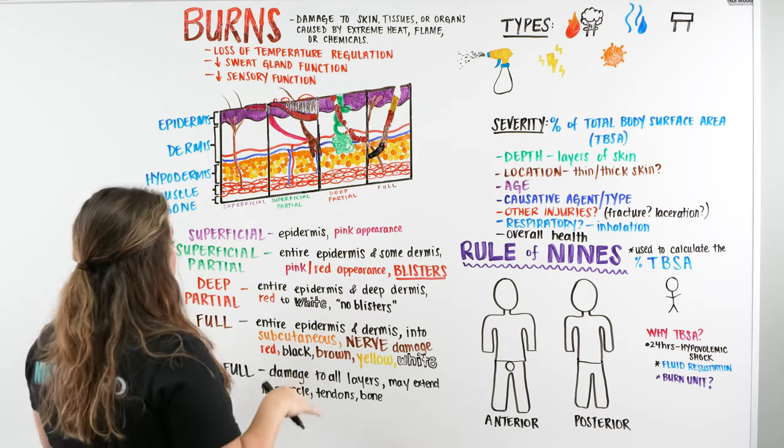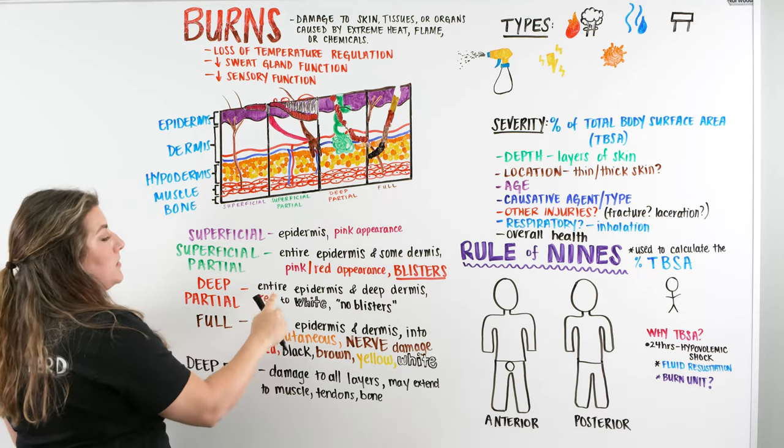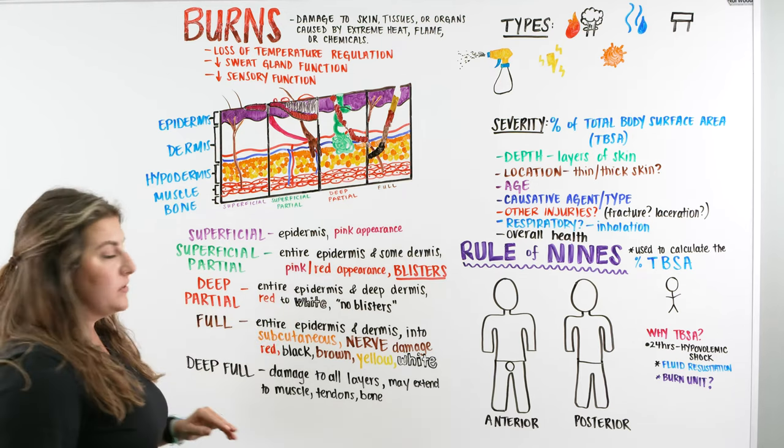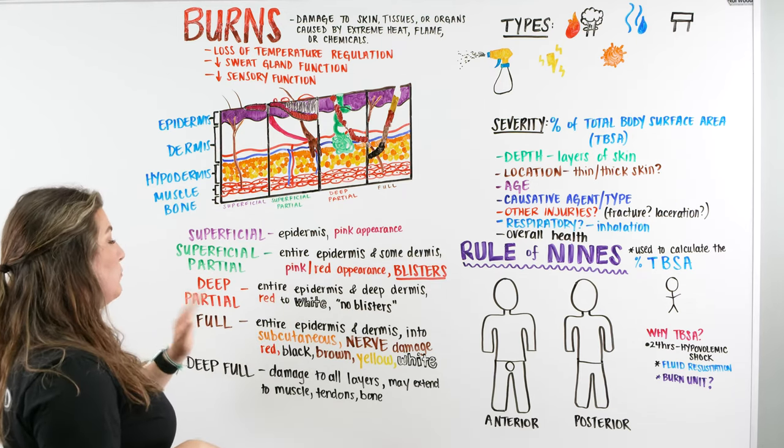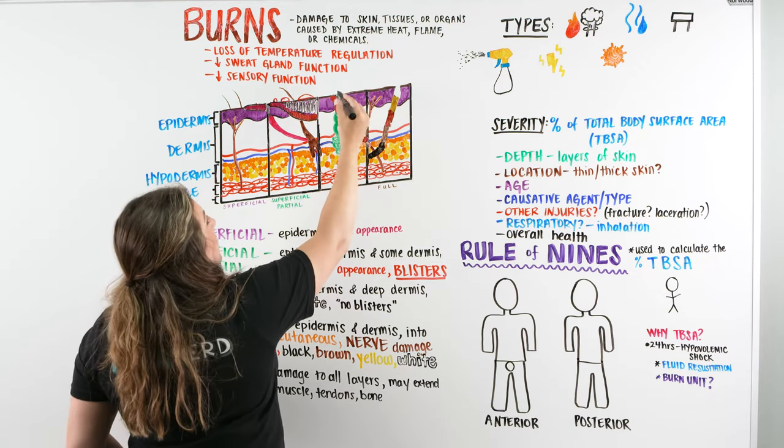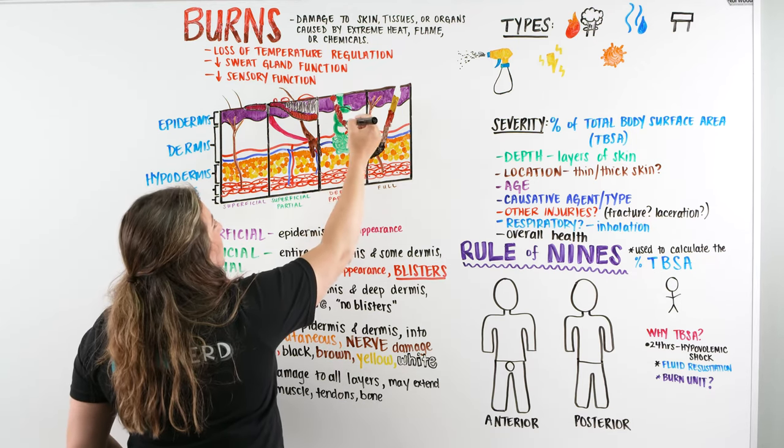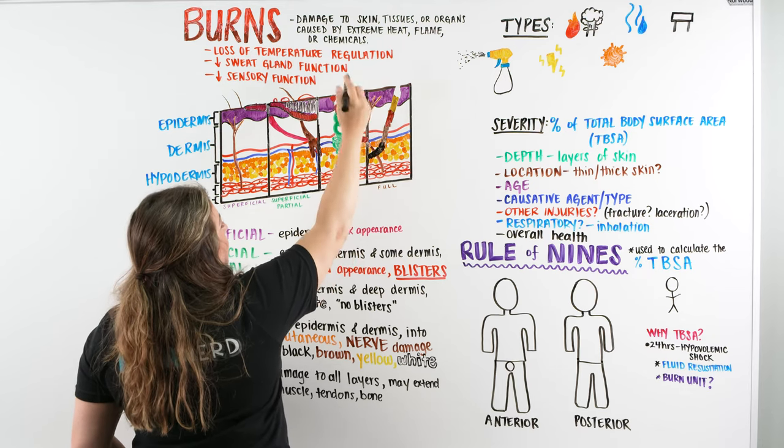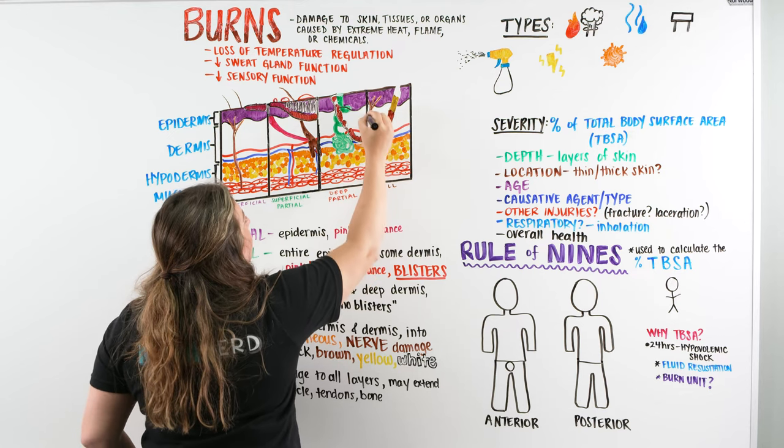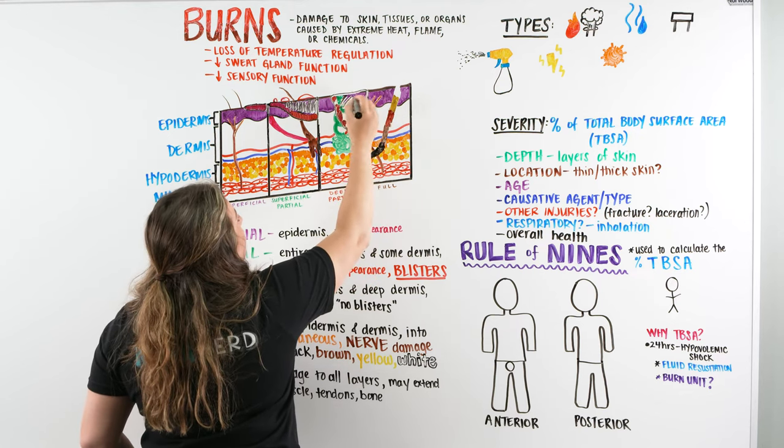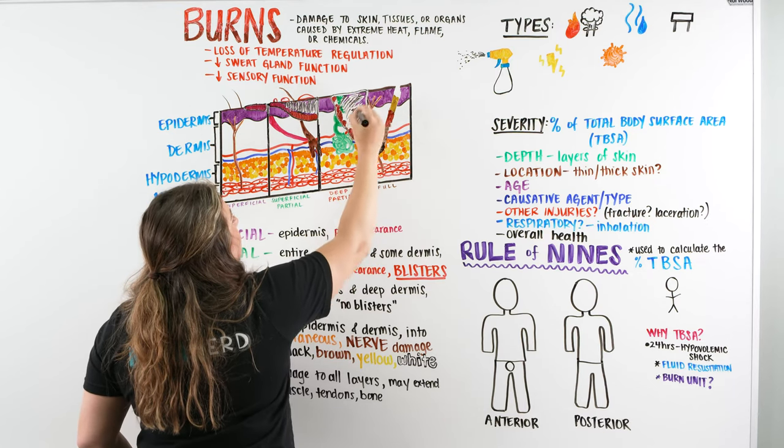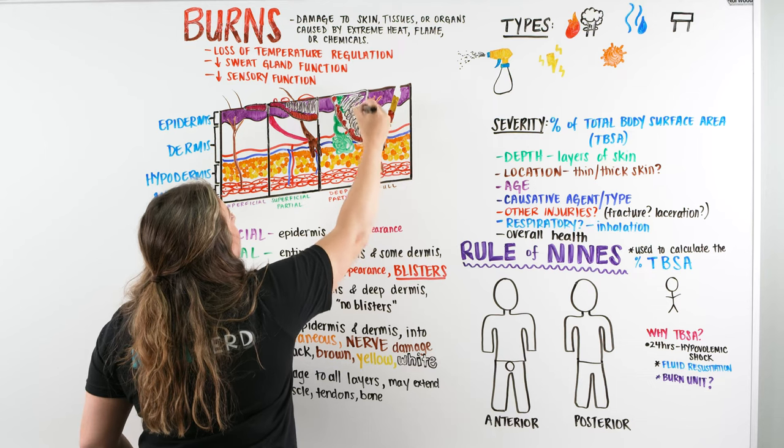Then we go into our deep partial. Our deep partial is going to be the entire epidermis and deep into the dermis, hovering maybe right above our hypodermis. It's going to be red to white appearance and there's going to be no blisters. So if we look here, there's no blisters on top. There's this burn. It's red and white. Obviously, the appearance would be up on the superficial. So just for the sake of this diagram, let's outline the burn here. So this burn here is affecting a sweat gland. It's going down. It's almost into our hypodermis.